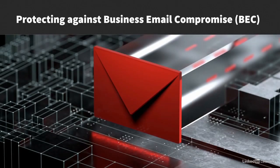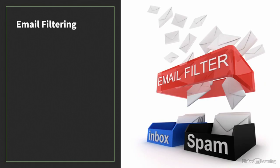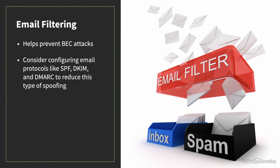Because BEC has characteristics similar to phishing attacks, some of the ways to protect against it will overlap. First, like with phishing, you can protect against BEC by implementing email filtering controls on your email server. And because BEC attackers will sometimes try to spoof legitimate domains, consider configuring email protocols like SPF, DKIM, and DMARC to reduce this type of spoofing. For instance, DKIM can be used to reject emails where the displayed domain doesn't match the domain of the originating email server.